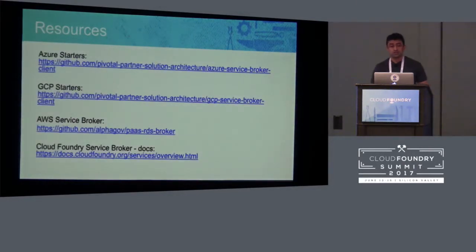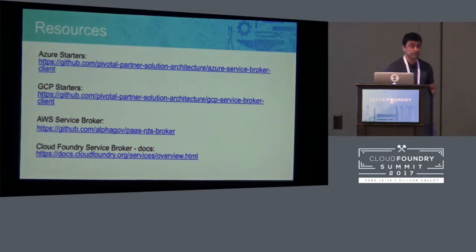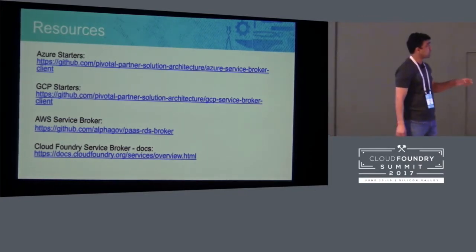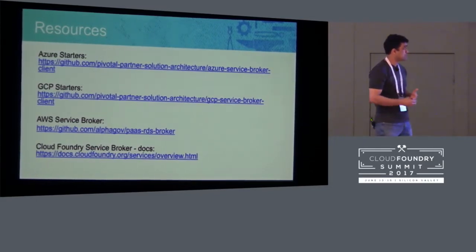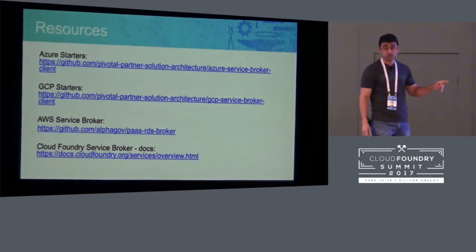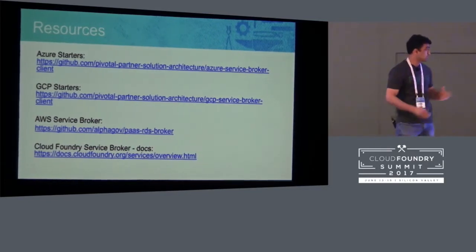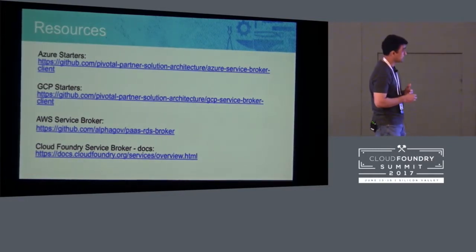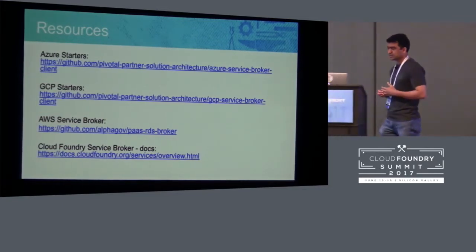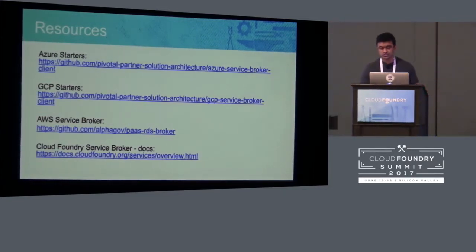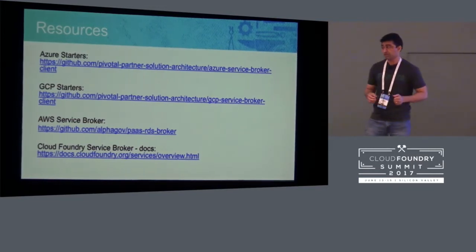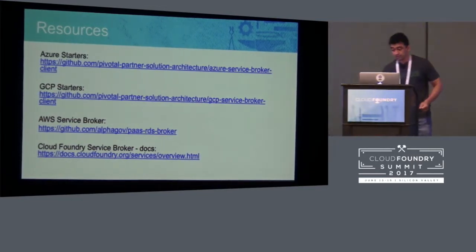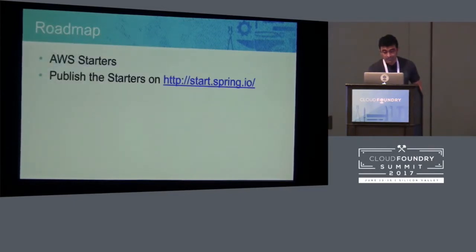Let's take a quick look at some of the resources. The top two links are the Azure and GCP starters — these are GitHub repositories that you will have full access to. At this point the Azure starters repo is already public; the GCP starters link is not public yet but will become public very soon. If you are looking for an open source option to consume AWS services, the AWS service broker is a good place to start — it currently offers three or four different AWS services. And if you're not completely familiar with how service brokers work in Cloud Foundry, there's very solid documentation on the Cloud Foundry website.